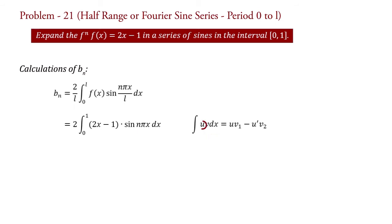If we compare this integral with this one, then here u = 2x - 1 and v = sin(nπx). So by applying this formula, we can write bn = 2[(2x - 1)(-cos(nπx)/nπ) from 0 to 1.